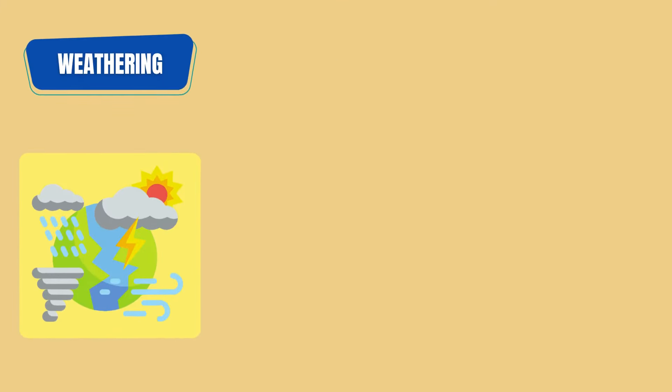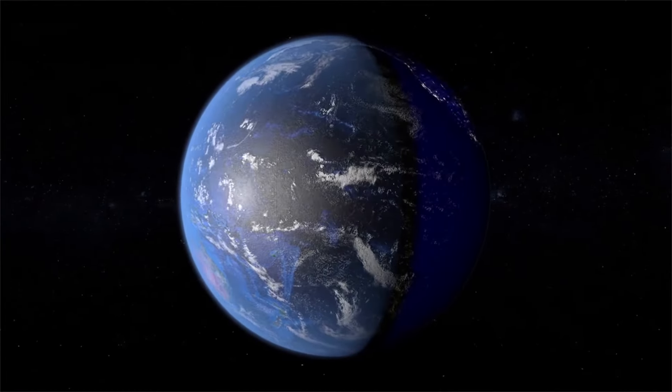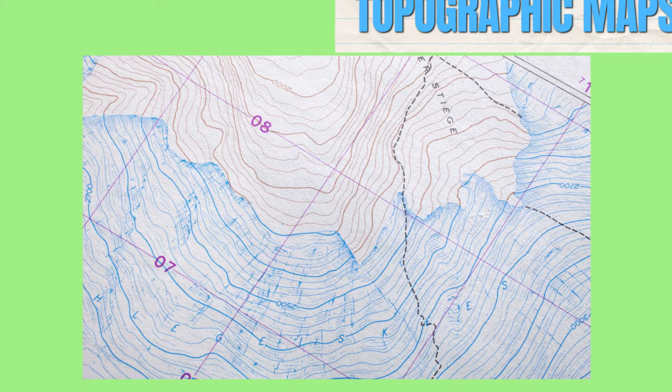Through the process of weathering, erosion, and deposition, the surface of the Earth is constantly being shaped and reshaped. We can study these changes in the shape of the Earth's surface by using topographic maps.